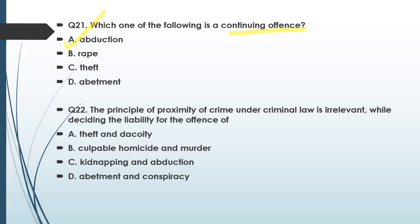Question number twenty-two: The principle of proximity of crime under criminal law is irrelevant while deciding the liability for the offense of — option A: theft and dacoity, option B: culpable homicide and murder, option C: kidnapping and abduction, option D: abatement and conspiracy. Note: the correct answer is option D — abatement and conspiracy. Also, study what other offenses come under continuing offenses.